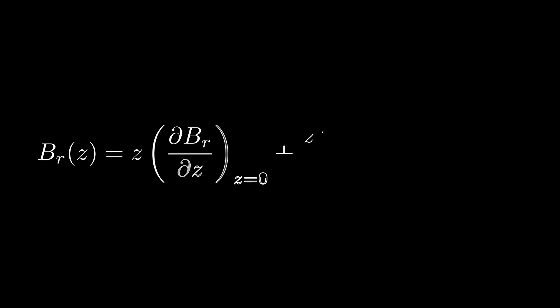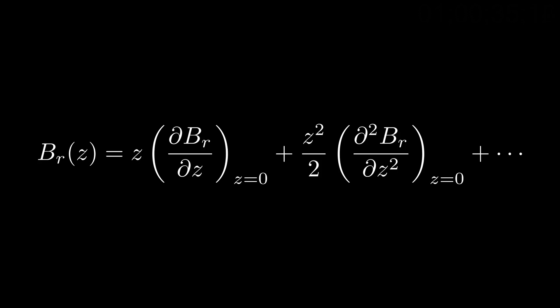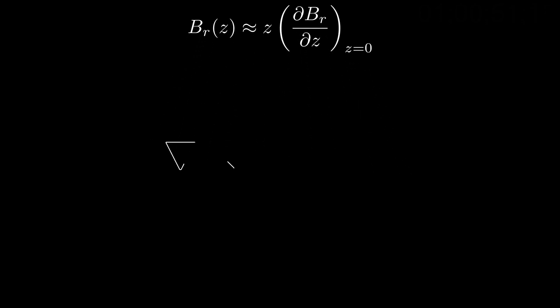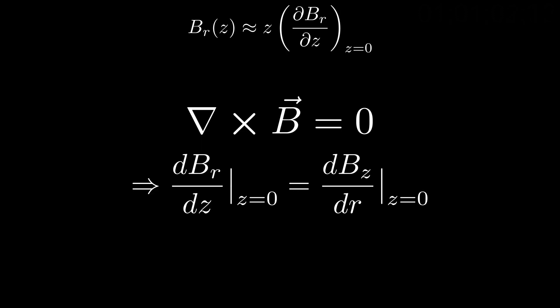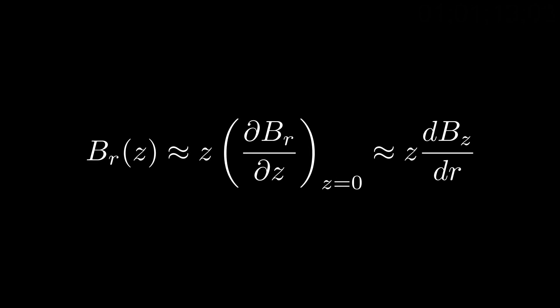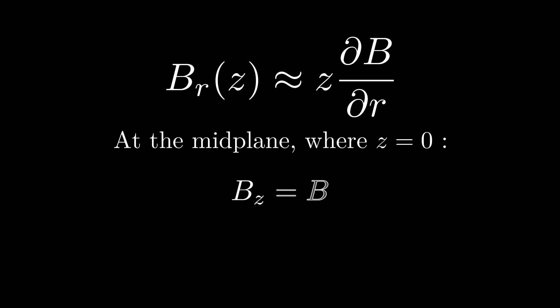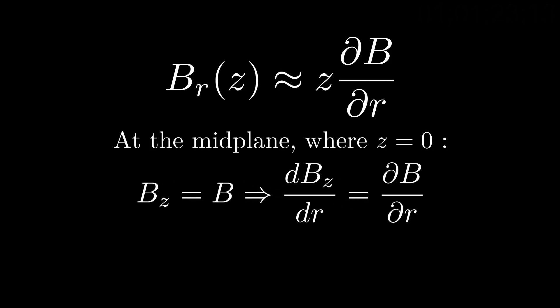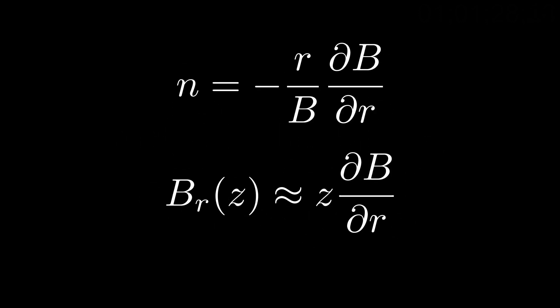We start by examining the radial field components. Taking the Taylor expansion of the magnetic fields, we write B_r equals z times dB_r/dz evaluated at z equals zero, plus z-squared over two times d-squared B_r over dz-squared evaluated at zero, plus higher order terms. We consider only the first term to linearize it and apply Maxwell's equation del cross B equals zero. Assuming azimuthal symmetry, this states that dB_r/dz at z equals zero equals dB_z/dr at z equals zero. We then write B_r as z times dB_z/dr, noting that dB/dr times z evaluated at z equals zero has no radial component. So at z equals zero, B_z equals B, and B_r can be written as dB/dr times z, which equals negative n times B_z over r.